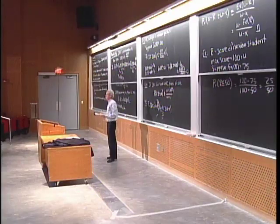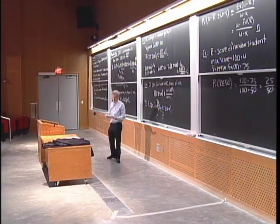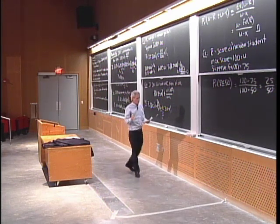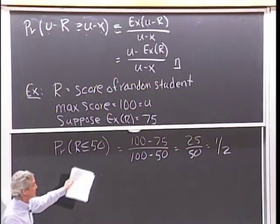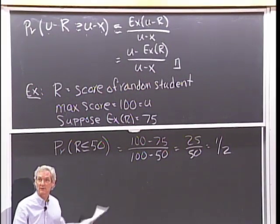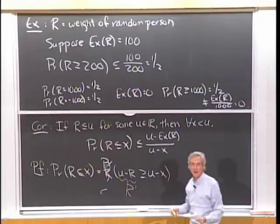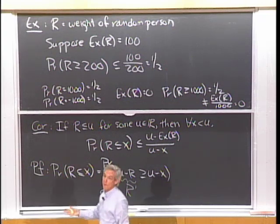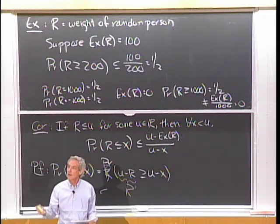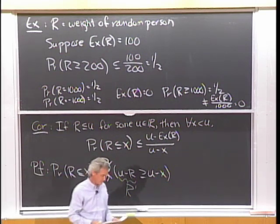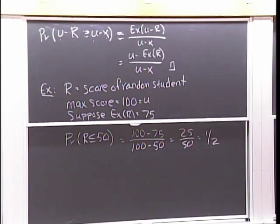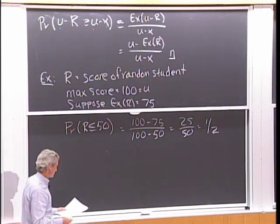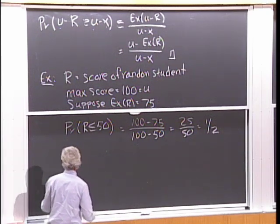So at most half the class can score 50 or below when the average is 75 and max is 100. Markov is sometimes exactly right — for instance, half the class could have scored 50 and half 100, making the average 75. Sometimes it's way off, like in the hat check problem. If you know more about the distribution, you can get better bounds, and if you know the variance, you can use Chebyshev's theorem.